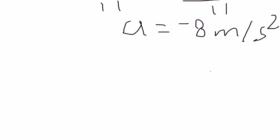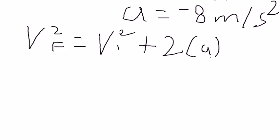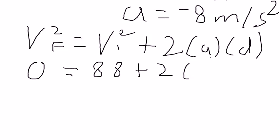We need to use the other equation to find the displacement, which is final velocity squared equals initial velocity squared plus 2 times acceleration times displacement. Then we plug it in. Zero equals 88 squared plus 2 times negative 8 times d.